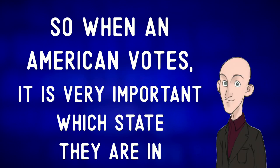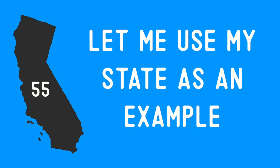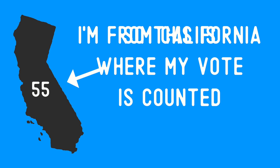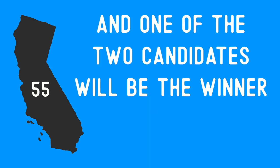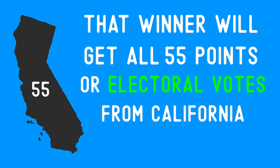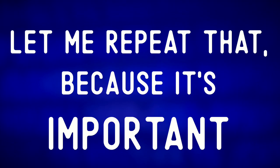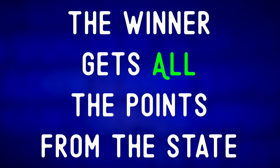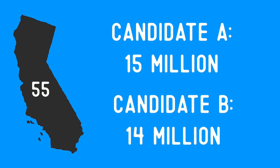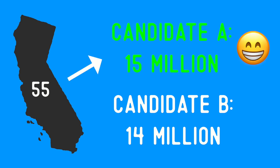So when an American votes, it is very important which state they are in. I'm from California, so this is where my vote is counted. Everyone in California will vote and one of the two candidates will be the winner. That winner will get all 55 electoral votes from California. Let's say 15 million people voted for candidate A and 14 million voted for candidate B — candidate A gets all 55 points. Candidate B gets nothing.